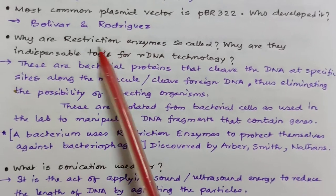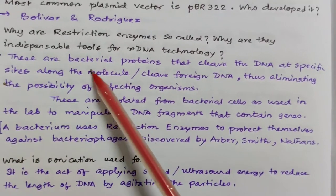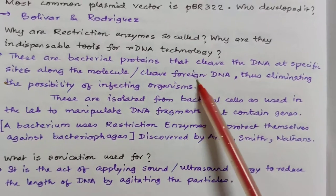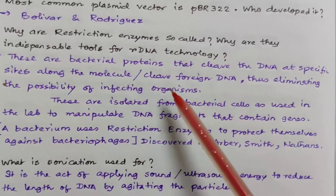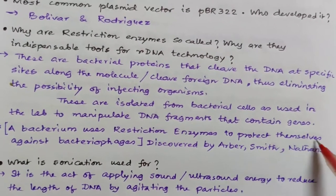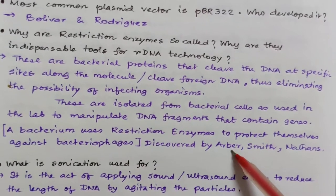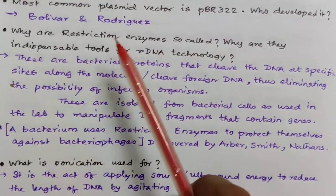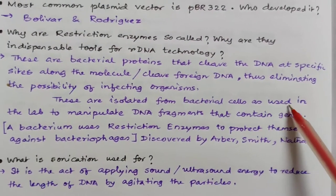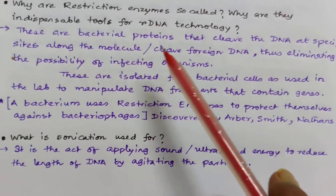pBR322 was developed by Bolivar and Rodriguez. Why are restriction enzymes called restriction enzymes and why are they indispensable tools for recombinant DNA technology? These are bacterial proteins that cleave DNA at specific sites, eliminating infecting organisms such as bacteriophages. This was first discovered by Arber, Smith, and Nathans. They are isolated from bacterial cells and used in laboratories to manipulate DNA fragments containing genes.